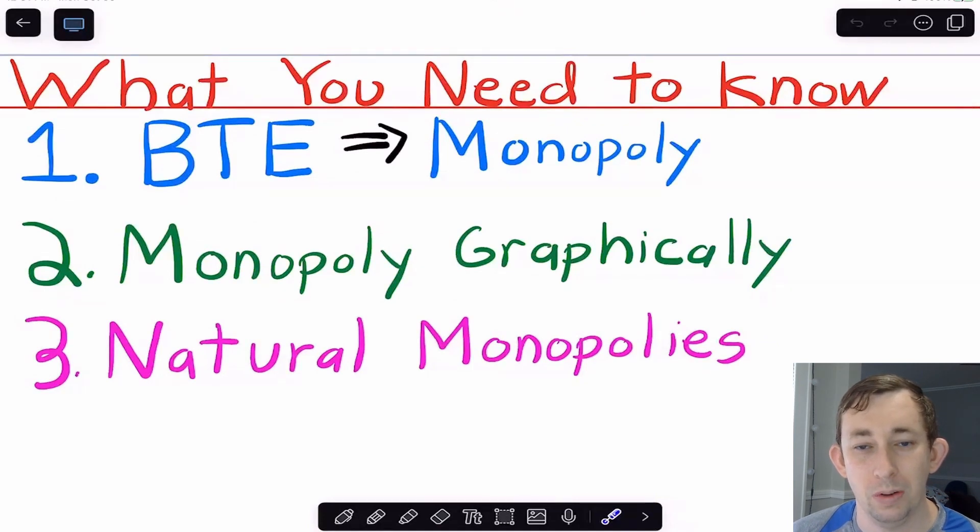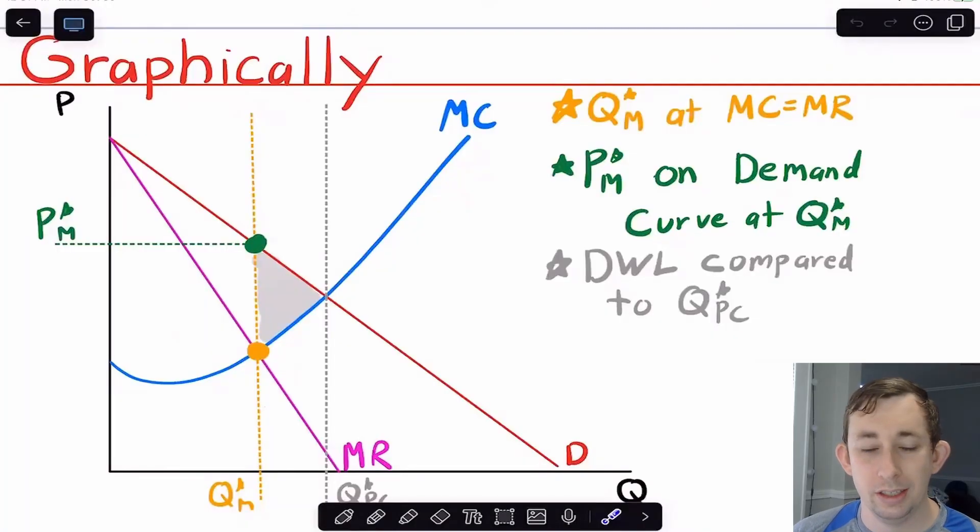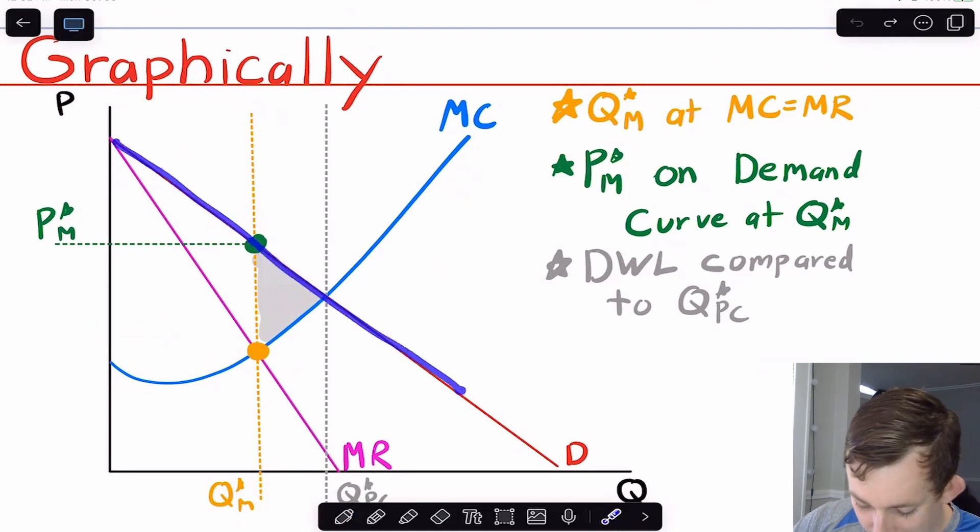So timestamps are below if you would like to jump around, but let's go ahead and get right into it. So here is the pre-drawn graph for a monopoly market, just like we talked about before in video 4.1, when we talked about a typical graph, we have a demand curve that looks like this.